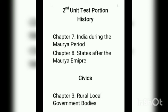Students, for the second unit test, you have chapter number 7, India during the Maurya period, and chapter number 8, states after the Maurya Empire — two chapters in history. In civics, you have chapter number 3, Rural Local Government Bodies. So for the second unit test, you have three chapters for your paper: two in history and one in civics. Okay, students?